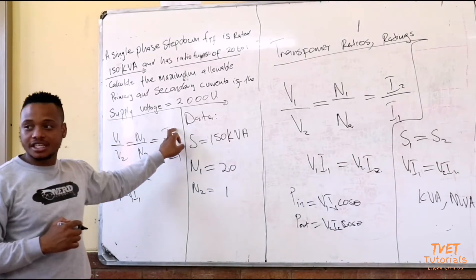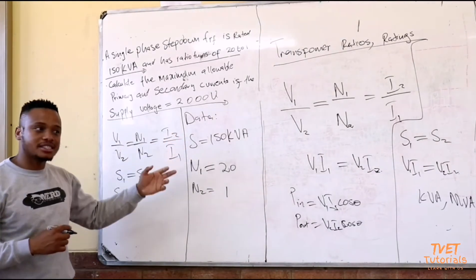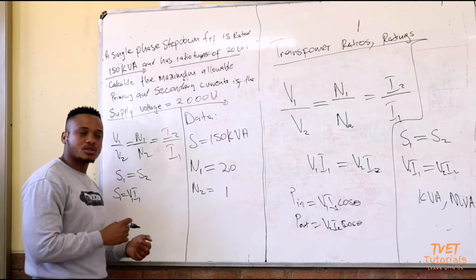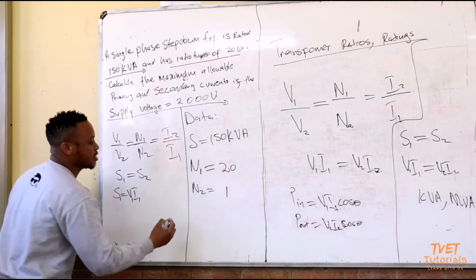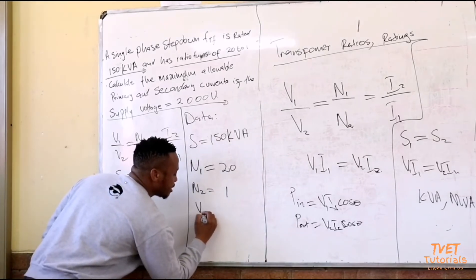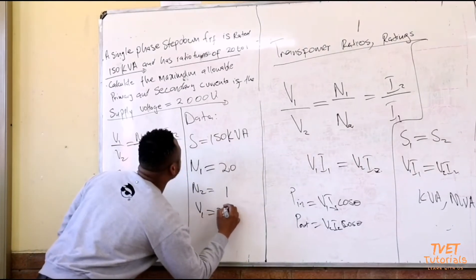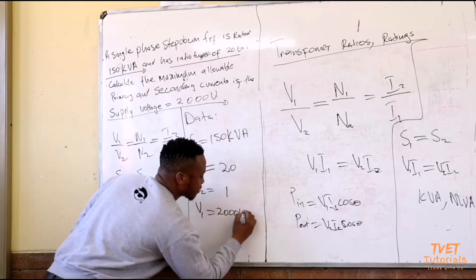I am also given the supply voltage. Supply voltage is the voltage on the primary side, the voltage that is supplied to the device. So that means V1 is equal to 2000 volts.